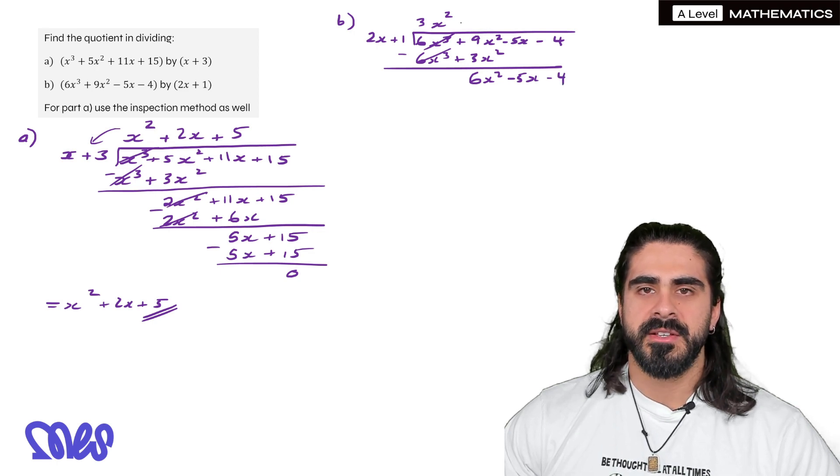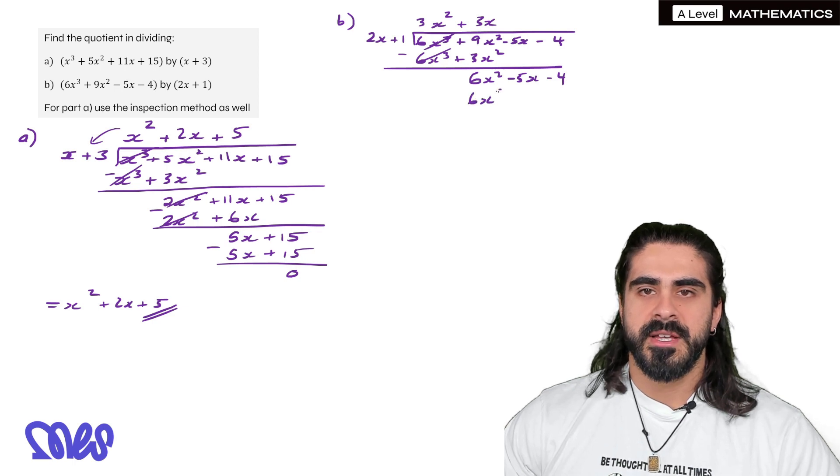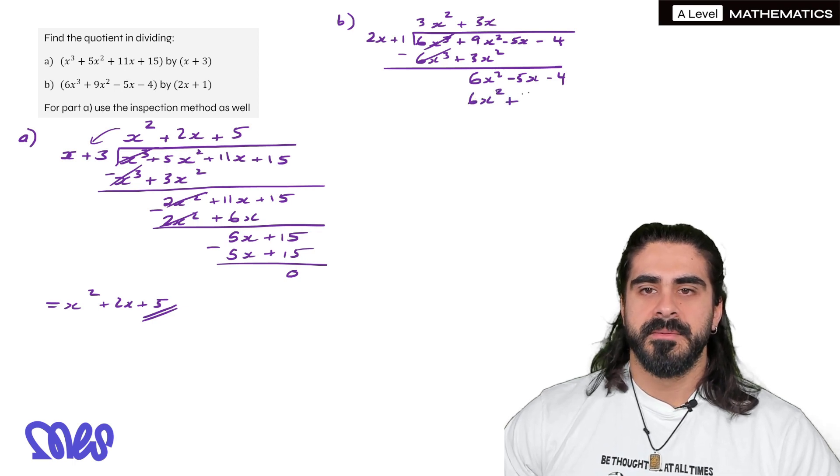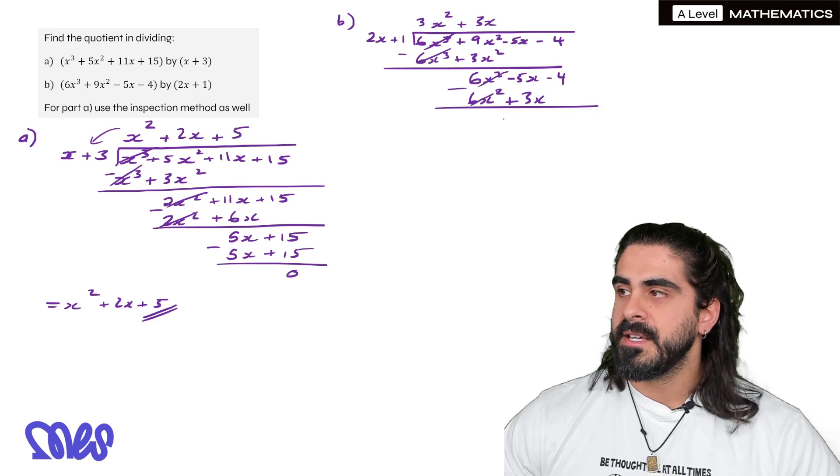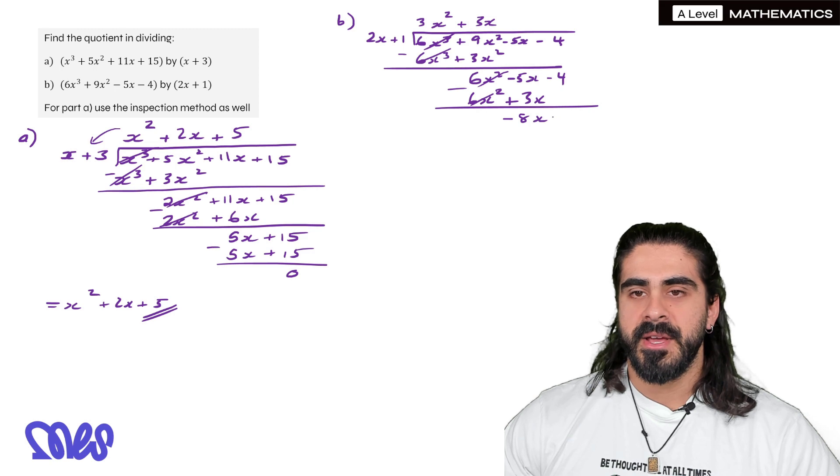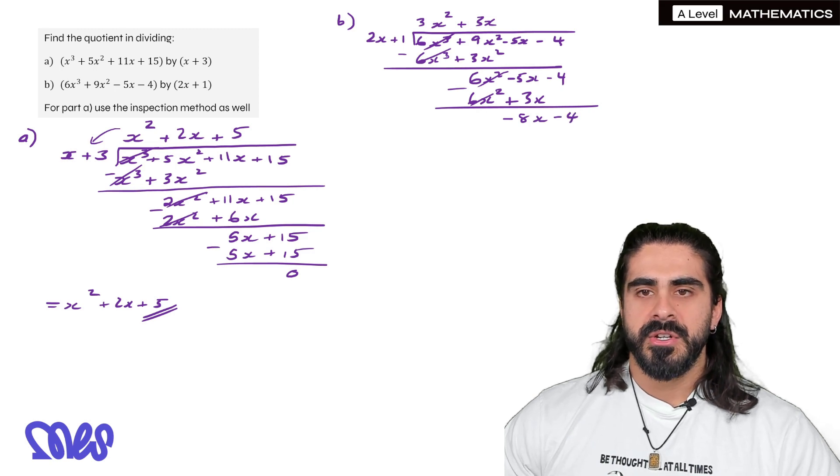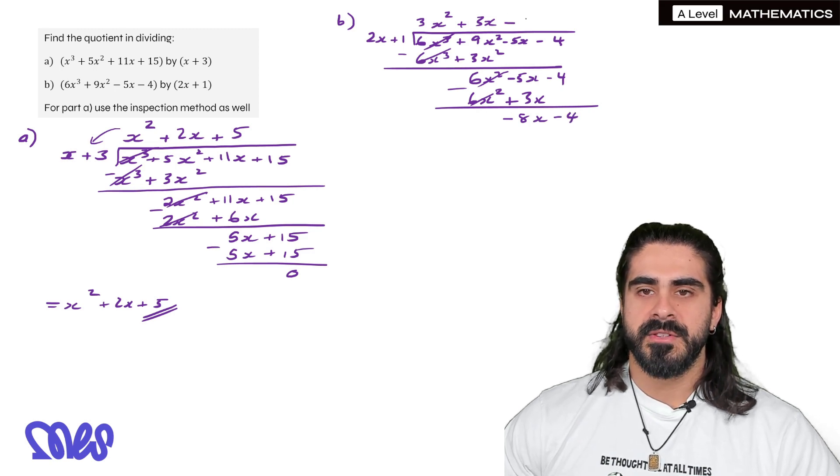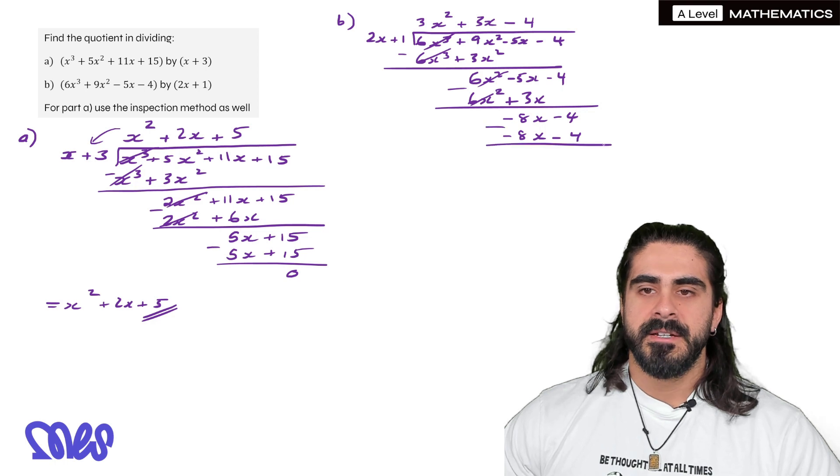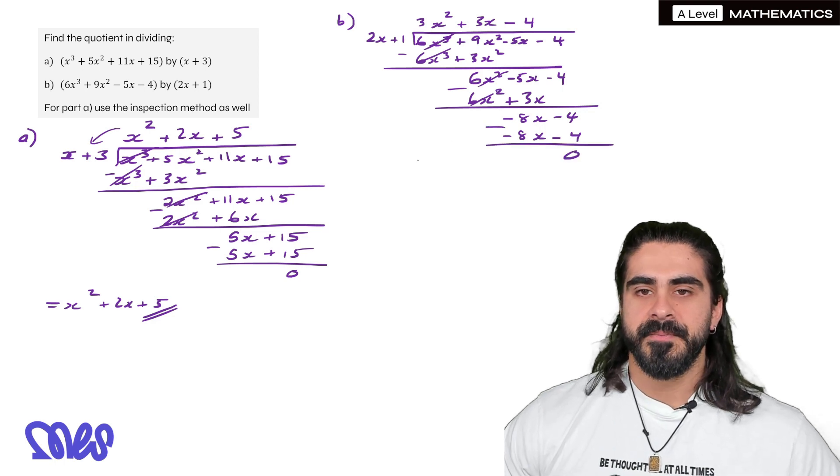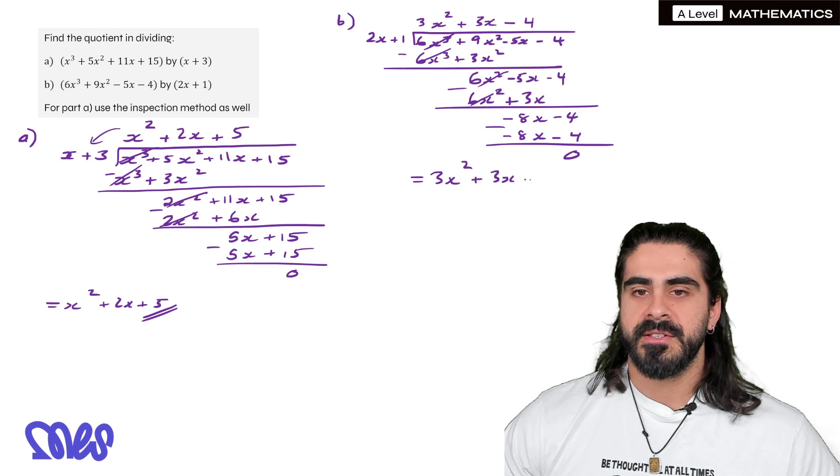2x times 3x gives you 6x². So we have 6x². 3x times 1 minus. Cancel. Minus 5 minus 3 is minus 8x. And then we have minus 4. 2x times minus 4 gives you minus 8x. So we get minus 8x. Then minus 4 times 1 is minus 4. And then that is 0. So the quotient here is 3x² + 3x - 4.